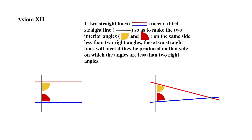Axiom 12: If two straight lines, red and blue, meet a third straight line, black, so as to make the two interior angles, yellow and red, on the same side less than two right angles, these two straight lines will meet if produced on that side on which the angles are less than two right angles. Basically, if the red and yellow angles are less than 90 degrees, the red and blue lines will ultimately touch at one point. If the yellow and red angles are 90 degrees, the red and blue lines will never touch. And if they are greater than 90 degrees, the red and blue lines will still never touch on the side the two angles are on.